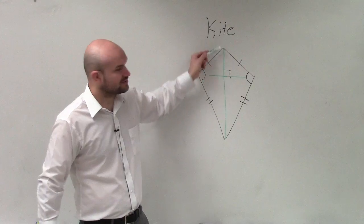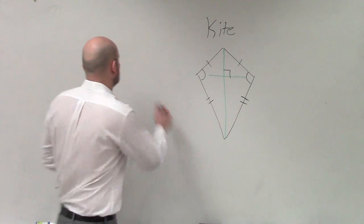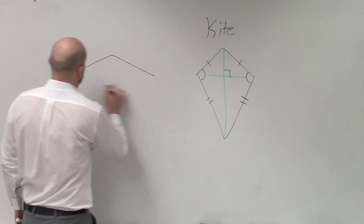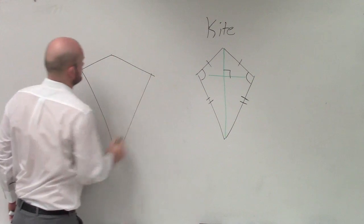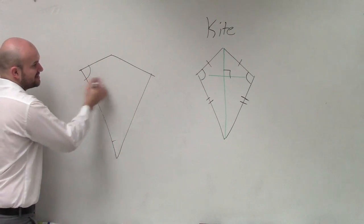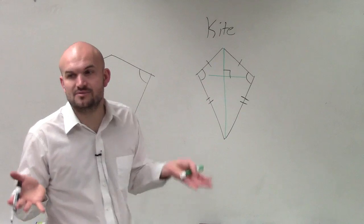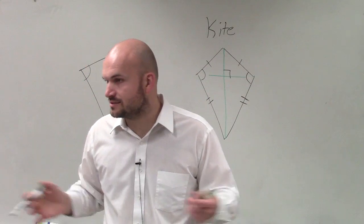You guys can see that these two angles would not be congruent to each other. Here, why don't I draw it like this? Maybe it makes a little more sense there, how these two are not the same, but these two are. You guys see that? So a kite is always going to have at least one pair of congruent sides with them.